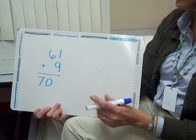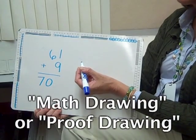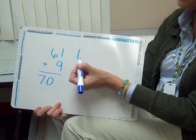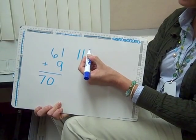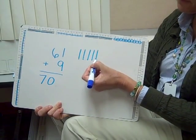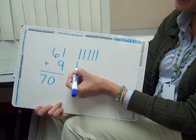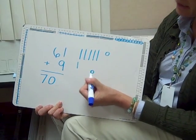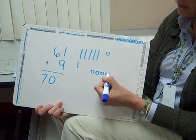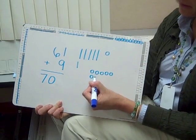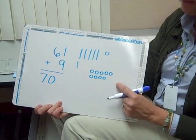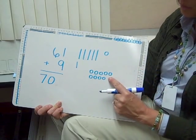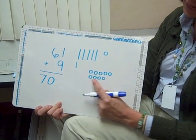They would also be able to show what we call a math drawing in grades one and two, or later a proof drawing. Here they're representing ten with a line. So they would represent 50, and one more ten down below makes 60, 61. They would represent nine with nine ones. Then they would look to see, do I have enough to make a new ten?